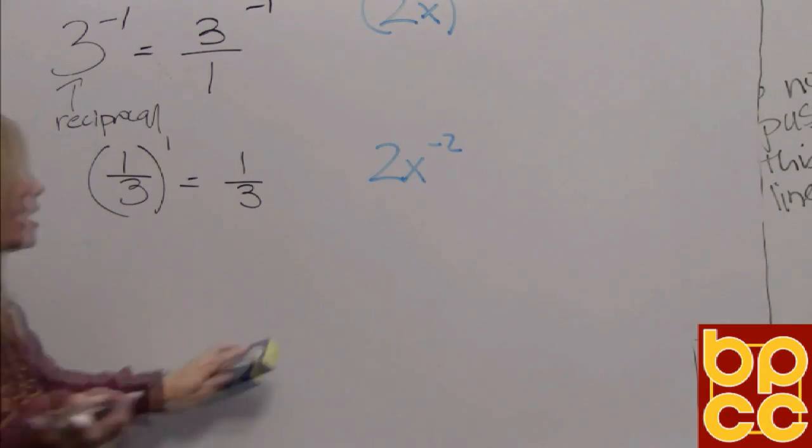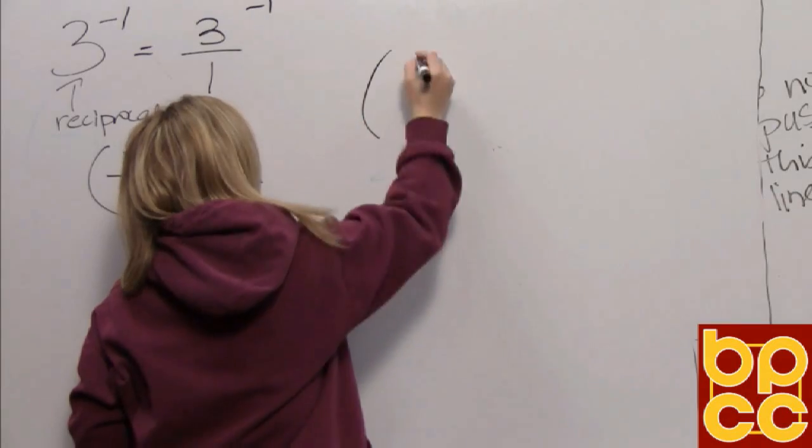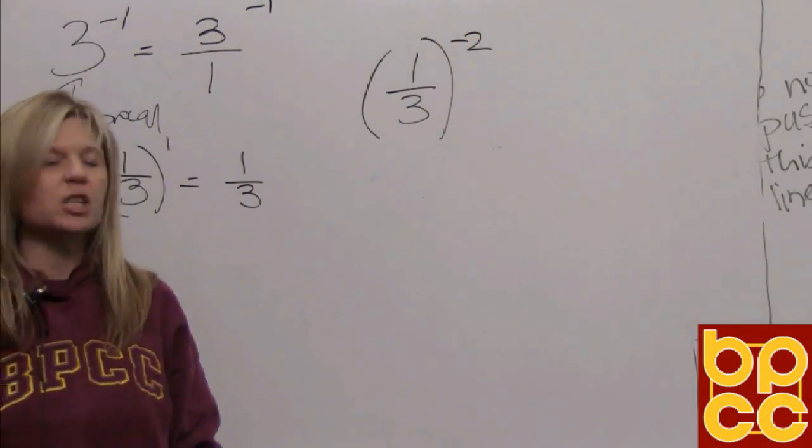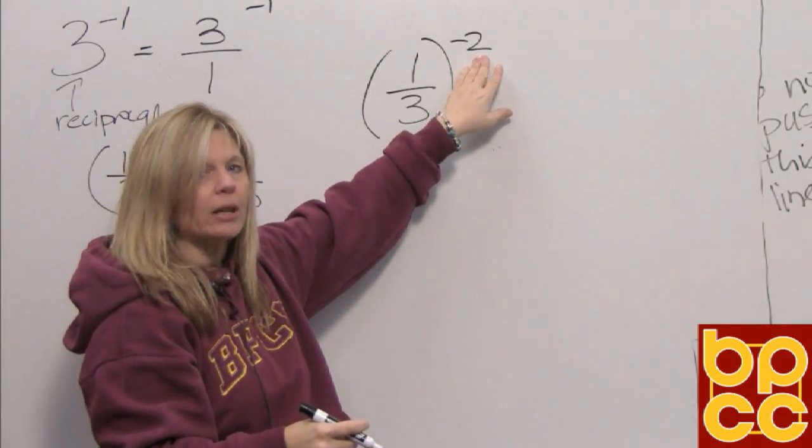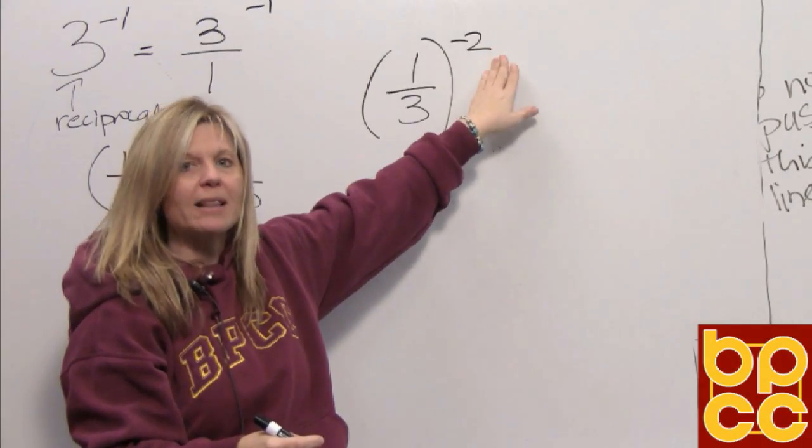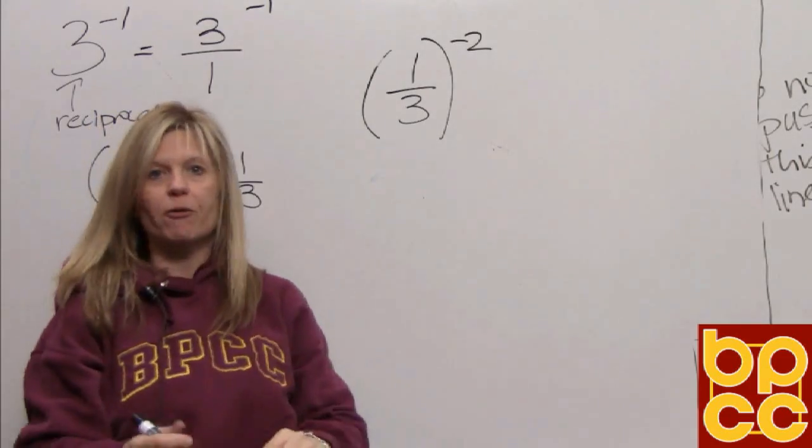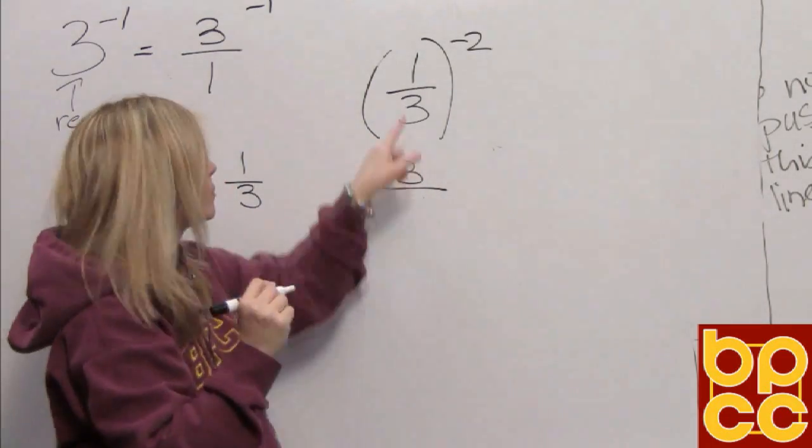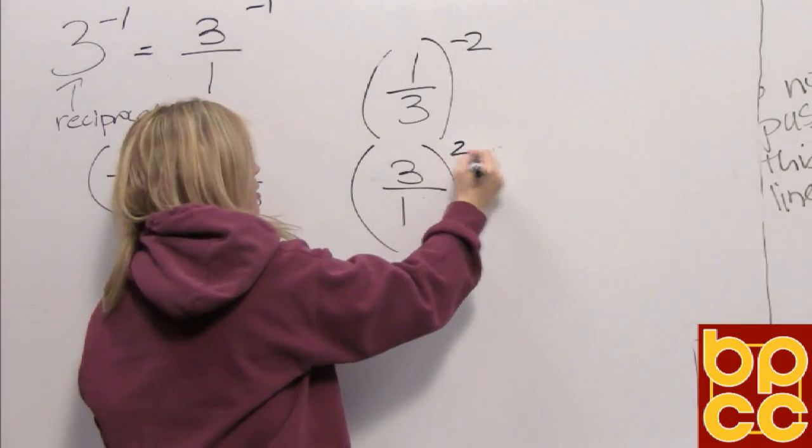Okay, let's try another one. If you look at your class notes, if I have 1/3 to the negative 2. Again we would look at this expression and say, okay, can't work with a negative exponent. Can't write this base negative 2 times. So what we're going to do is we're going to make this exponent positive by doing the reciprocal. Because this is already a fraction we're just going to flip it. We're going to put the denominator in the numerator spot. Put the numerator in the denominator spot. And now our exponent becomes a 2.